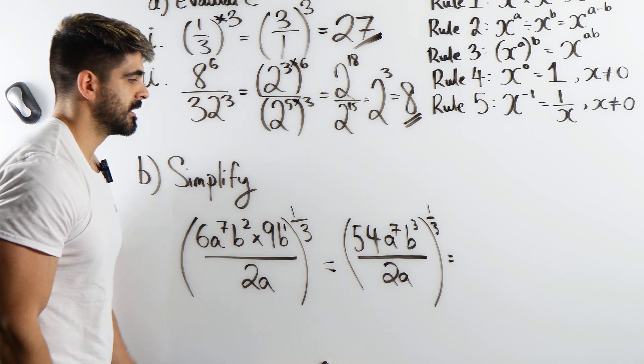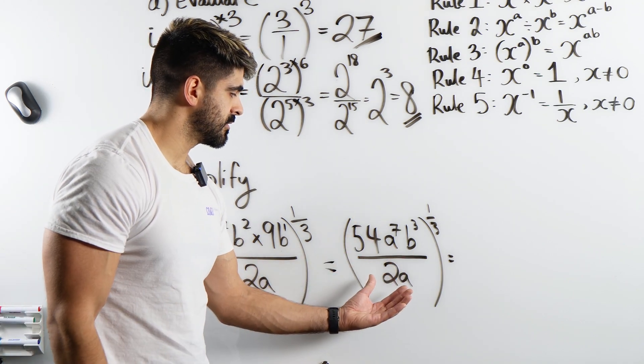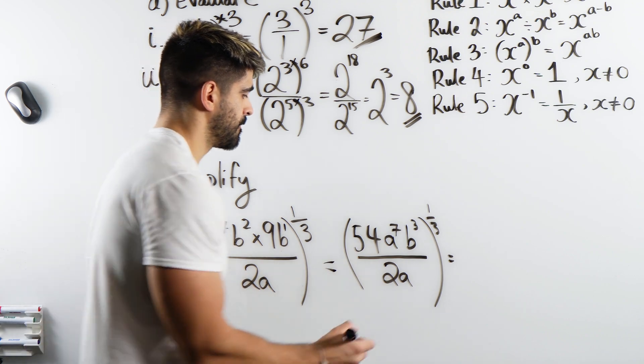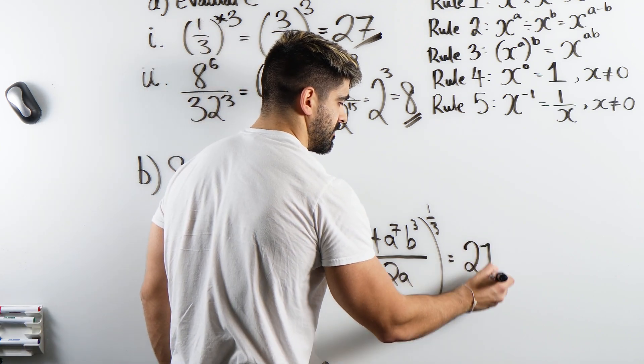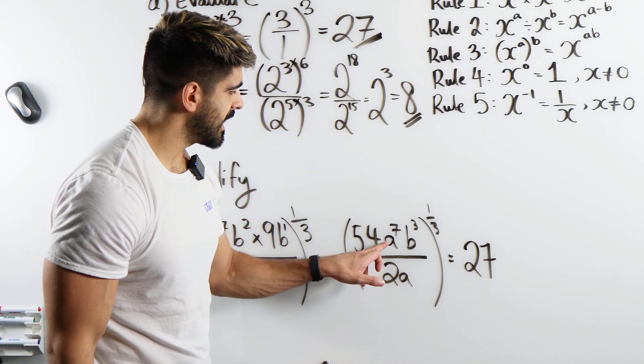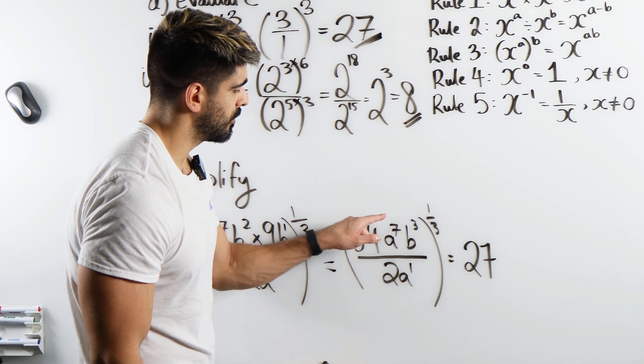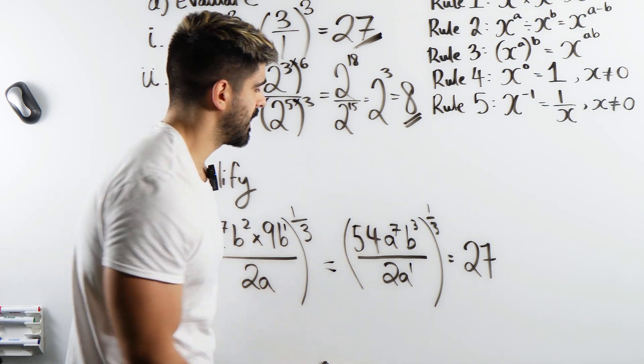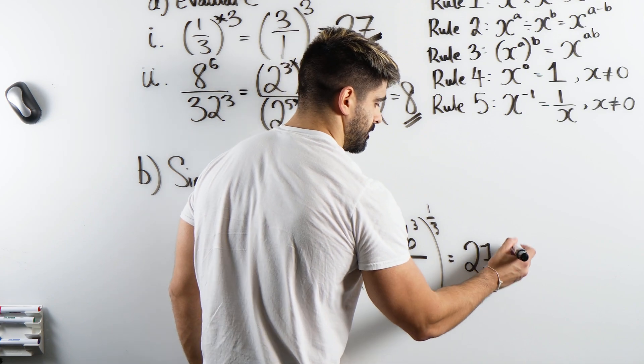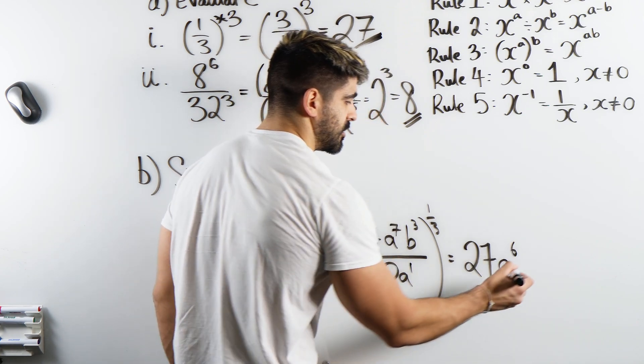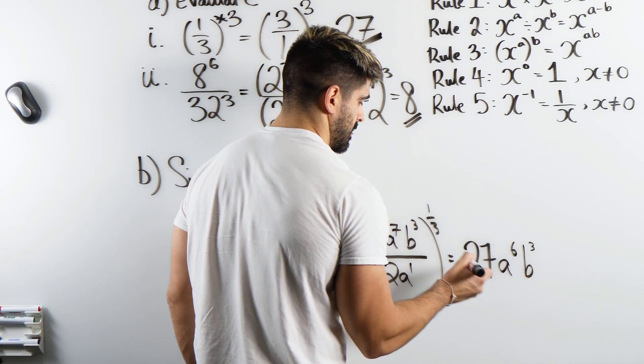Divided by 2a raised to the power of a third. Okay, now we're dividing two numbers. So we have 54 divided by 2 is 27. a to the power of 7 divided by a to the power of 1. Okay, well we subtract the powers, we'll have a to the power of 6. And then you're just left with b cubed to the power of a third.